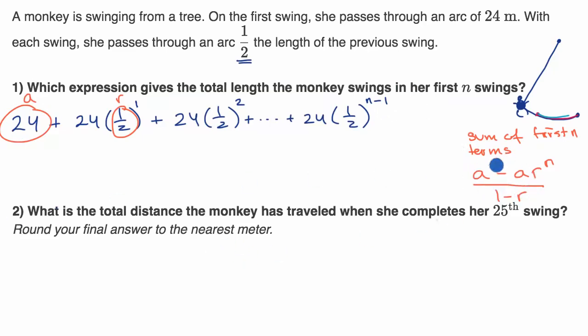And there's other ways that you might have seen this written. You could factor an a out, and you might have seen something like this: a times (1 - r^n), all of that over (1 - r). These two are equivalent. But now let's use this.